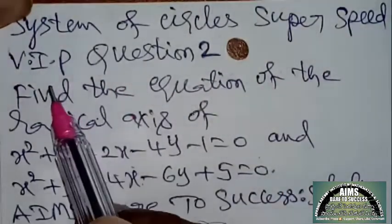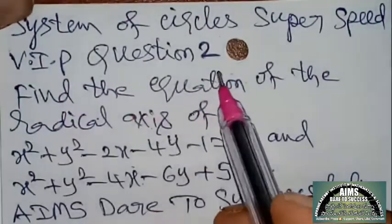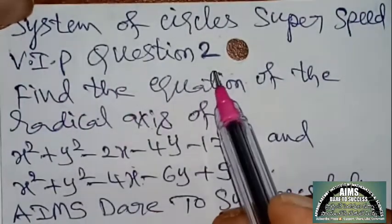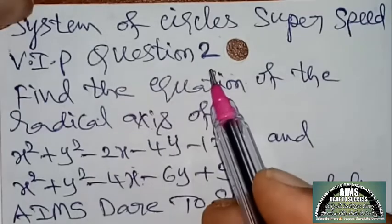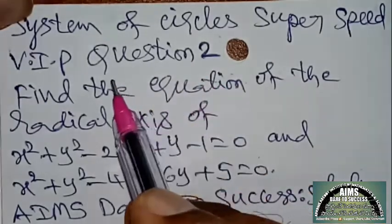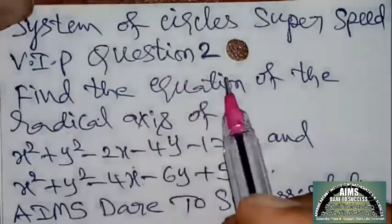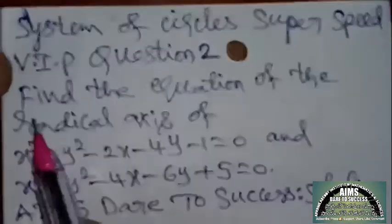System of circles, super speed, VIP question number 2. VIP means very important previous question. VIP is always VIP.